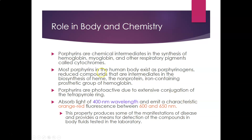Each hemoglobin molecule has four heme groups. Porphyrins are chemical intermediates in the synthesis of hemoglobin, myoglobin, and other respiratory pigments called cytochromes, which are used in energy production and ATP synthesis. Most porphyrins in the human body exist as porphyrinogens — reduced compounds that are intermediates in the biosynthesis of heme. Heme is the non-protein iron-containing prosthetic group of hemoglobin, with globin being the protein component.